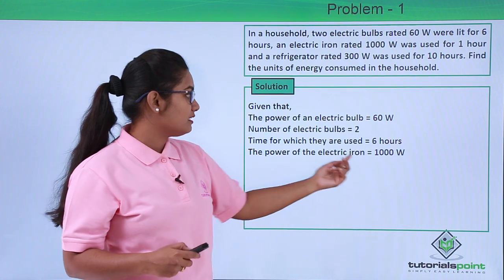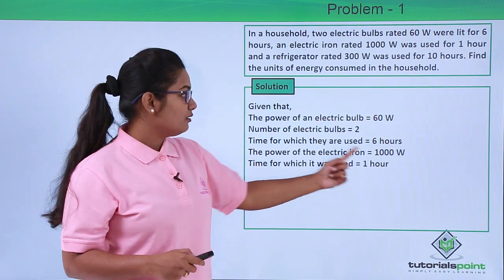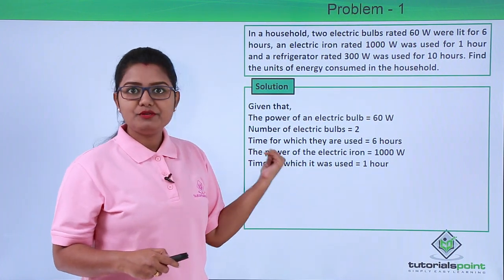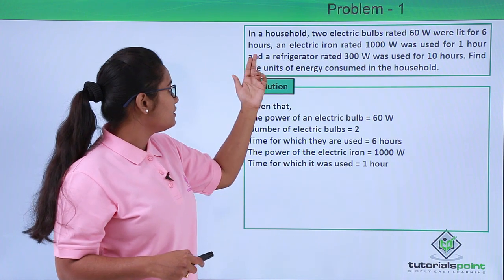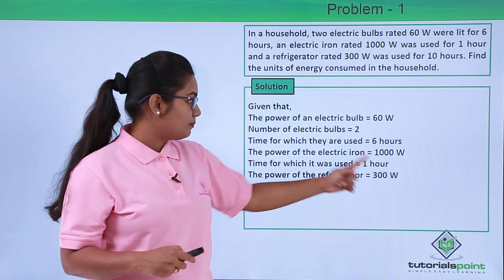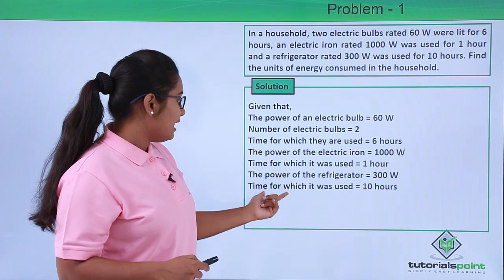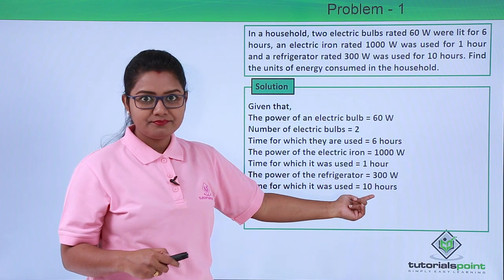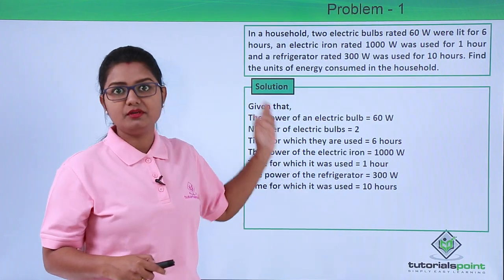The power of the electric iron is 1000 watts, and it was used for one hour. Another appliance used was the refrigerator, rated at 300 watts, and it was used for 10 hours. This is all the information we have from the question.